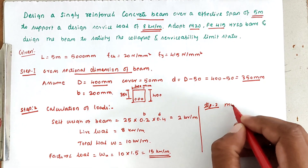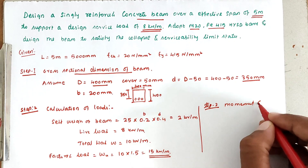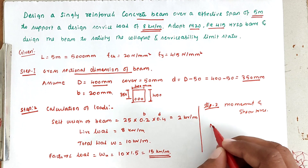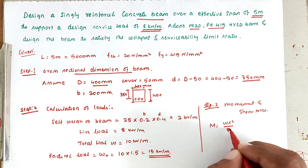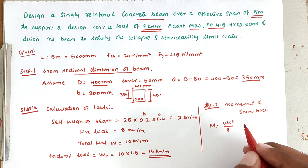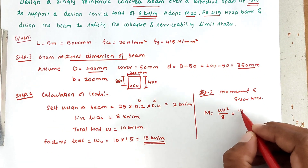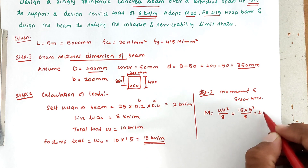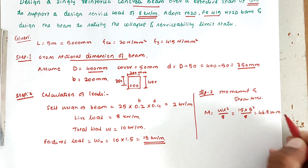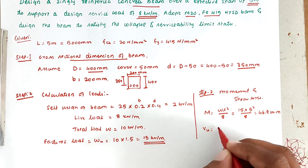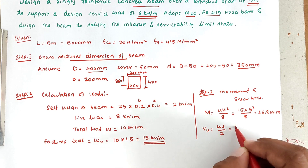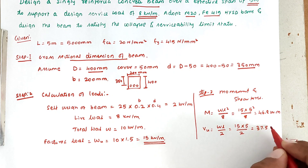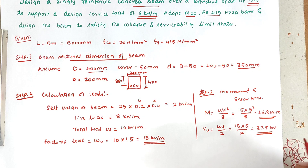Step 3: Find moment and shear force. The bending moment M = WL²/8 = 15 × 5² / 8 = 46.8 kilonewton meter. The shear force V = WL/2 = 15 × 5 / 2 = 37.5 kilonewton. This gives us the design moment and shear force.